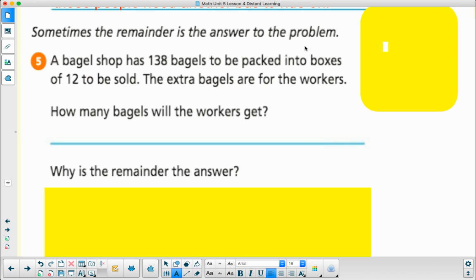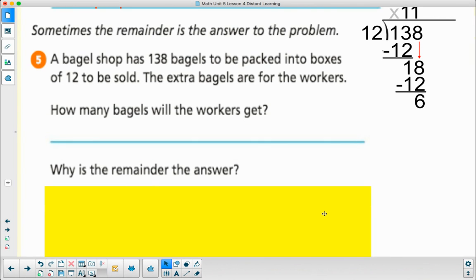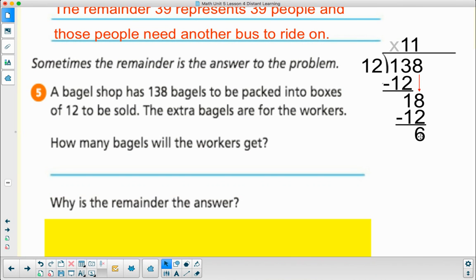Number 5: sometimes the remainder is the answer to the problem. A bagel shop has 138 bagels to be packed into boxes of 12 to be sold. The extra bagels are for the workers. I have 138 bagels that I'm going to put into boxes that have 12 bagels in each box. That meant I filled 11 boxes, but I have 6 left over. That 6 left over are of the 138 bagels that didn't fit. That's how many bagels the workers will get.